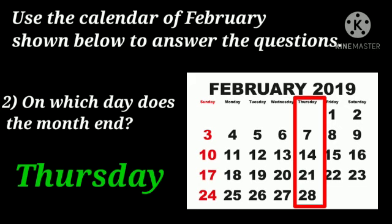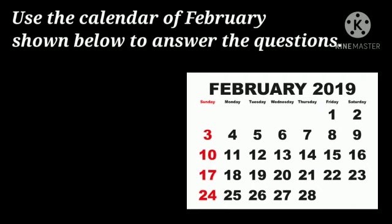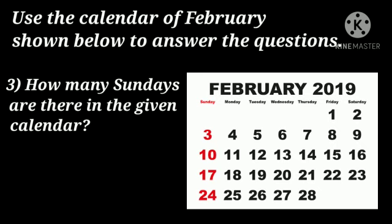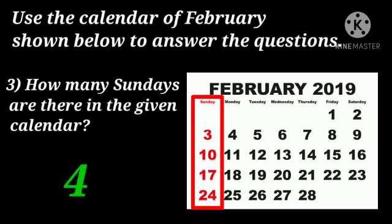Let's see our next question, question number three: how many Sundays are there in the given calendar? We have to find out how many Sundays are there. So first we will search the Sunday column. We can see one, two, three, four. So there are four Sundays in the given calendar.